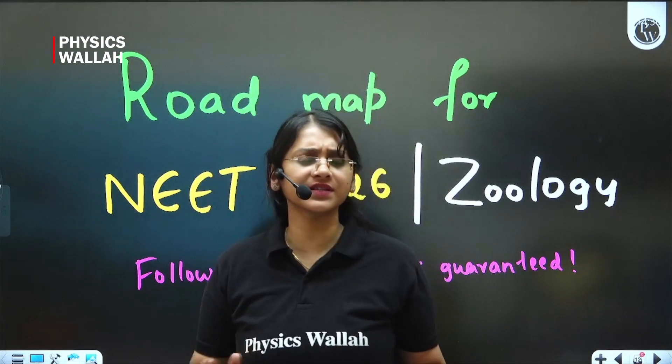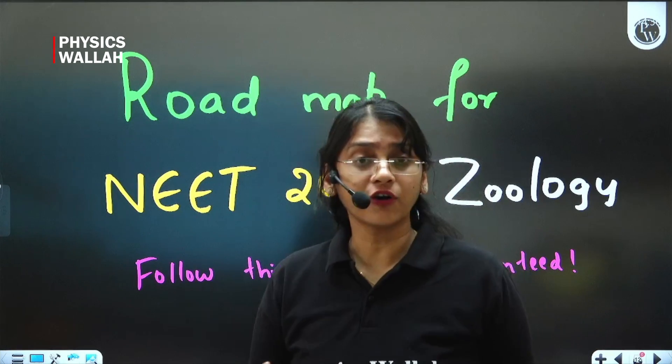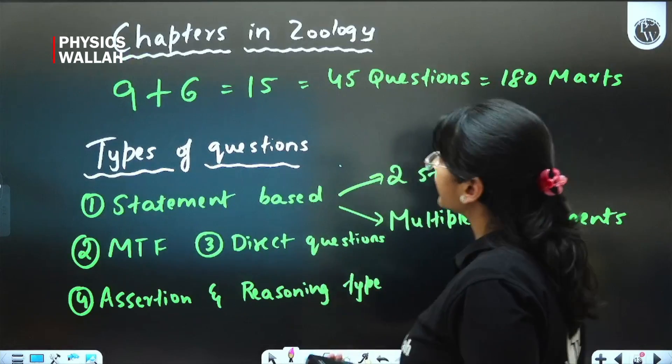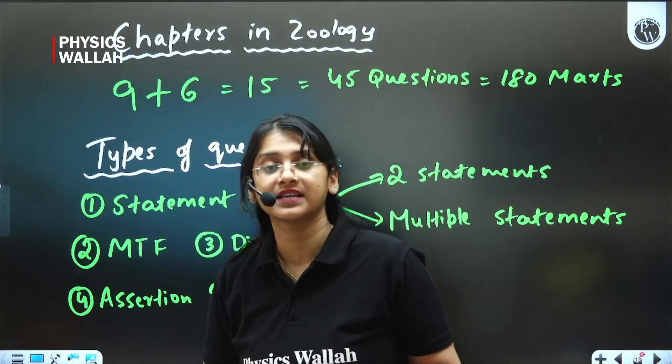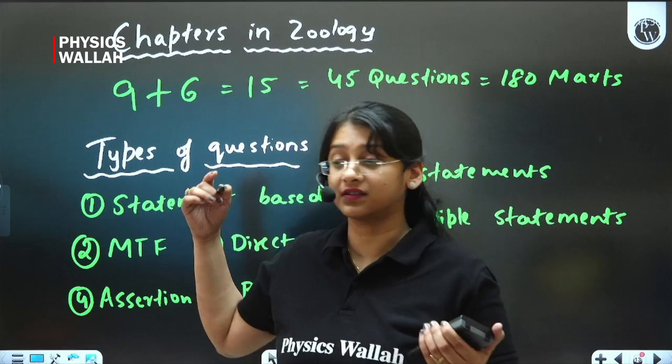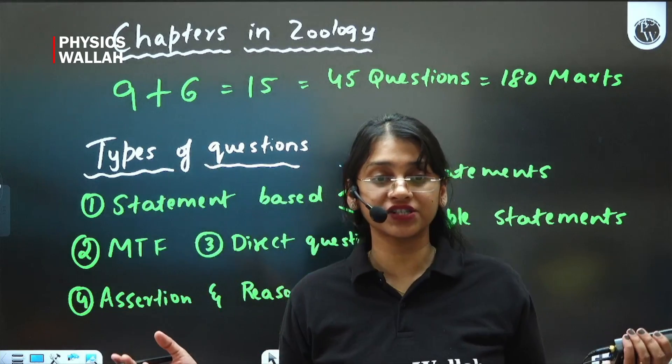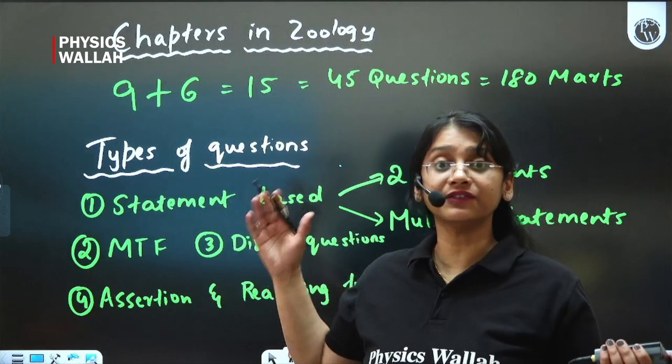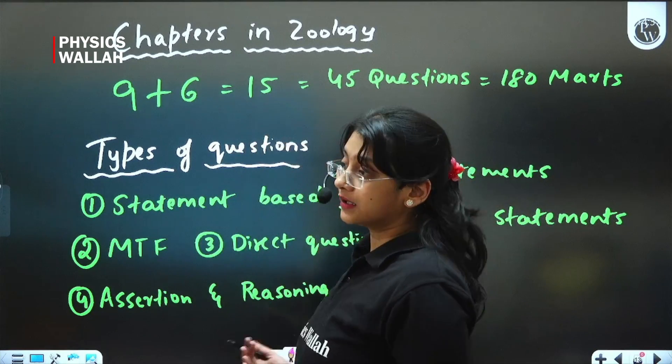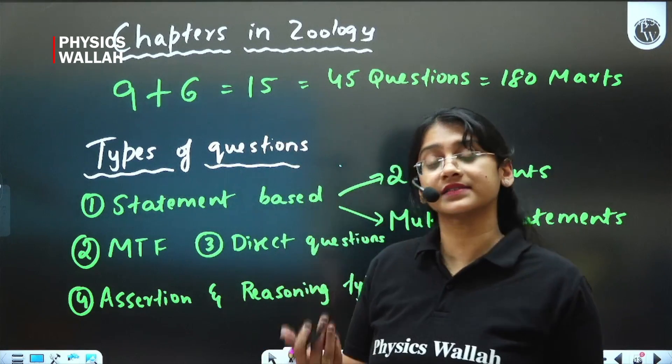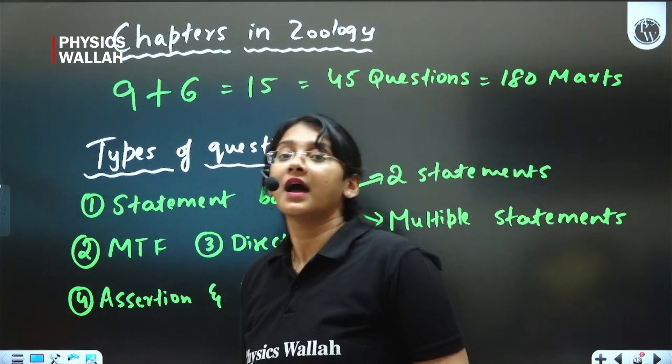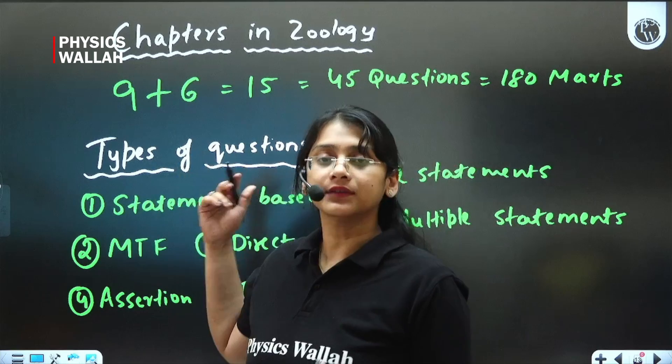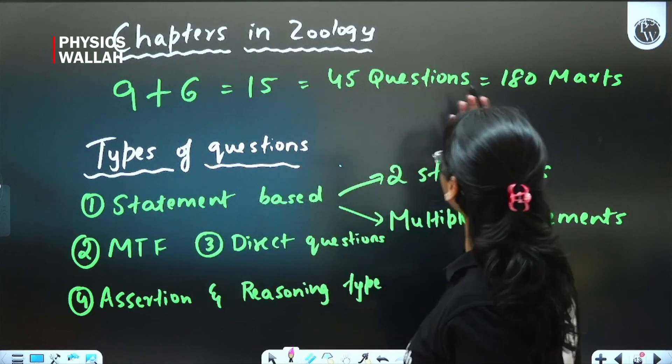We will see how many chapters you have to study for your NEET 2026 zoology. All you need to study is just 15 chapters. In class 11th standard, you would be having around 9 zoology chapters, and in class 12th, you just have 6 chapters to study. In total, 15 chapters for your NEET 2026 zoology exam. From these chapters, around 45 questions will be expected, that is going to be total 180 marks.